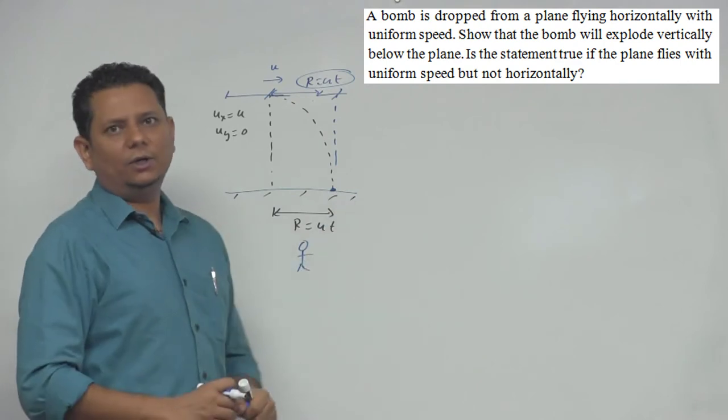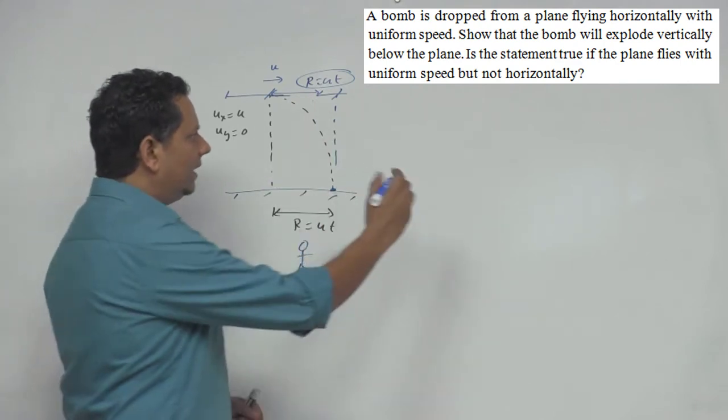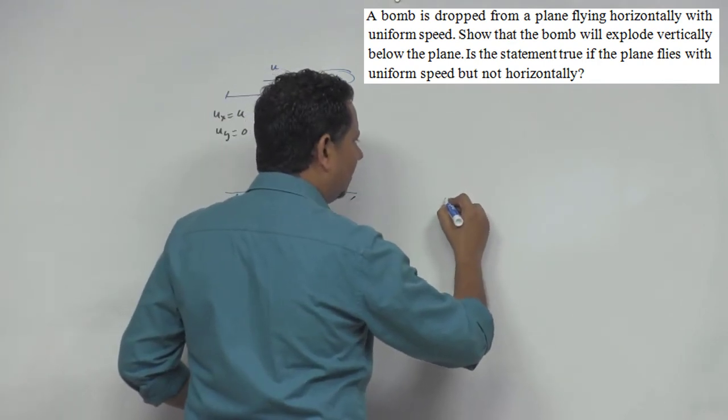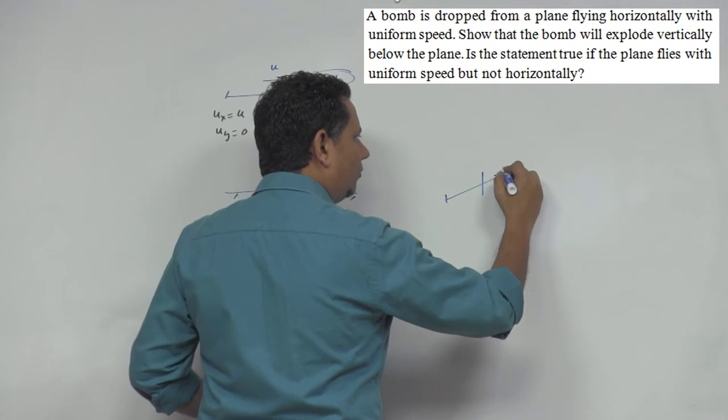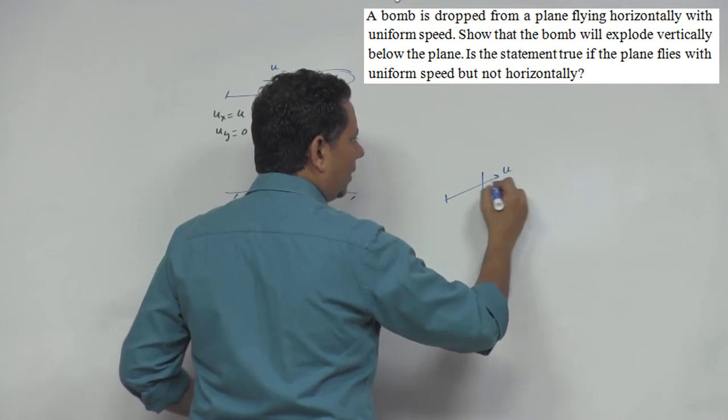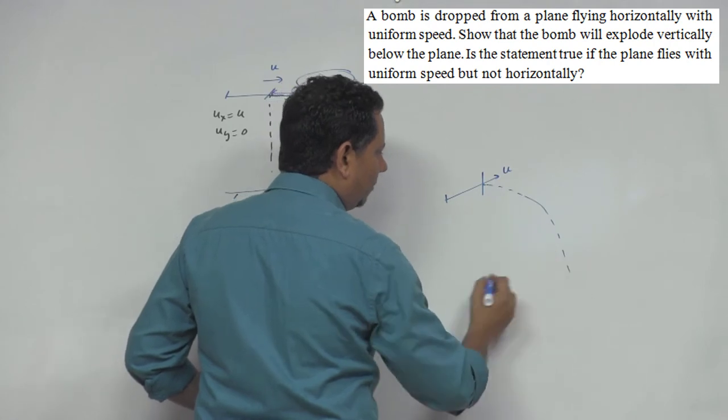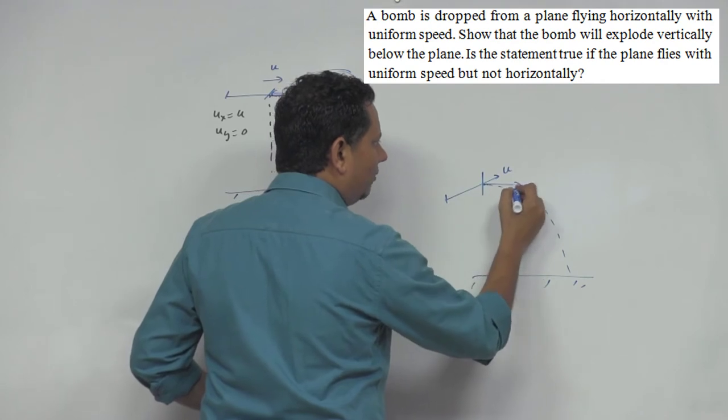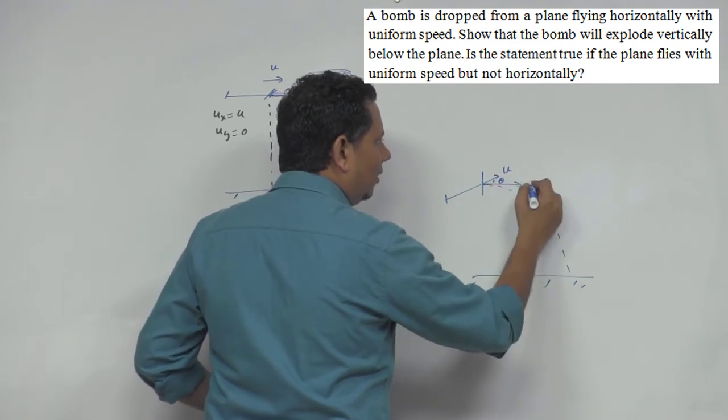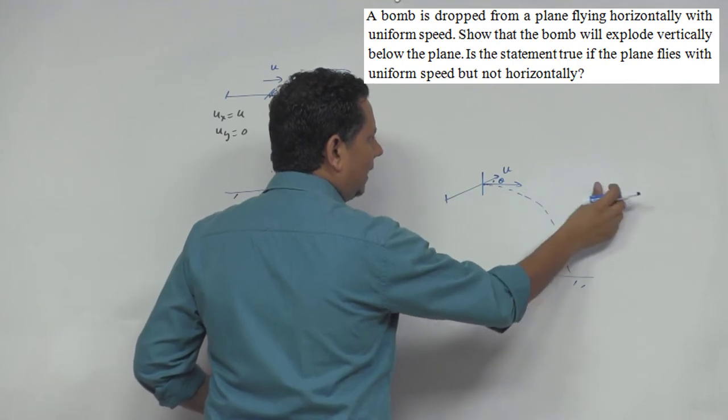Now imagine a case where, for example, the aeroplane is going like this, and it has some velocity u in this direction. From here, the particle is dropped. The particle's trajectory will be such that the particle's horizontal velocity, let's say this angle is theta, that velocity will be u cos theta.